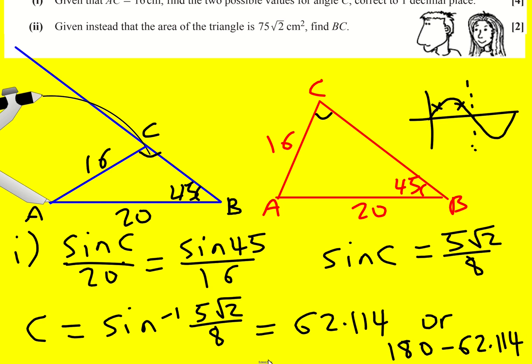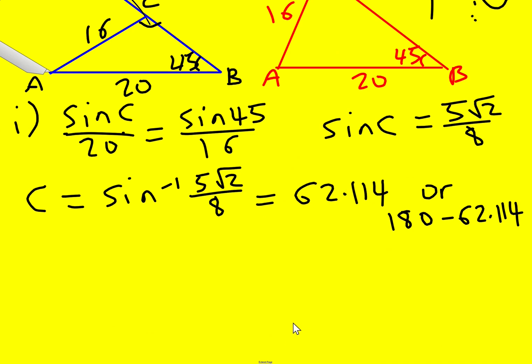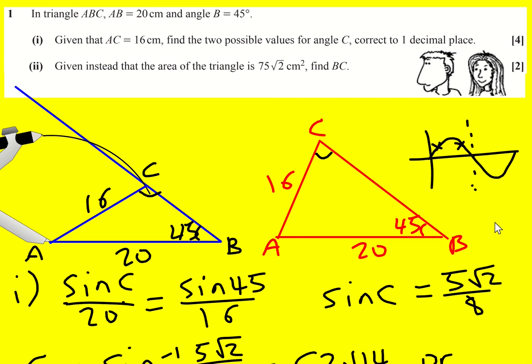And that will give us our two solutions which we need to write correct to one decimal place, 62.1 degrees or 117.9 degrees. So that is part one sorted.